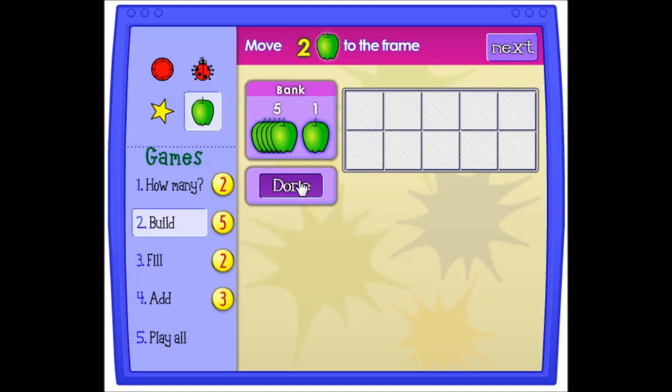Move two apples to the frame. Done. So if you try to do too many, it will tell you that's too many. If you try to put in too few, it will also correct you. That's not enough. And that's it. TenFrame. Have fun.